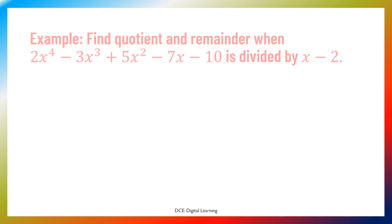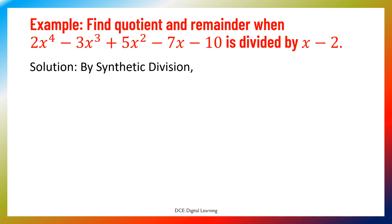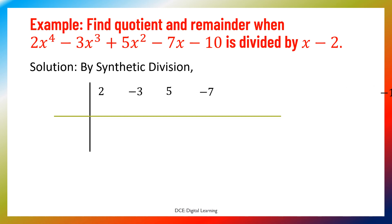Let's see an example. Find the quotient and remainder when 2x to the 4 minus 3x cubed plus 5x squared minus 7x minus 10 is divided by x minus 2. Let's apply synthetic division. First, we draw horizontal and vertical lines. We write the coefficients of f(x): 2, minus 3, 5, minus 7, minus 10. We write the multiplier x equals 2.